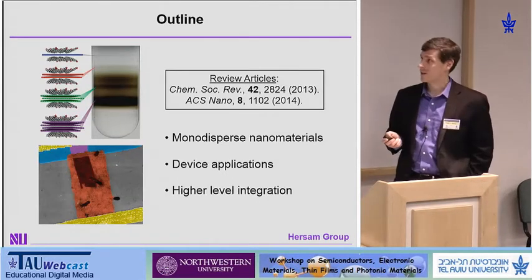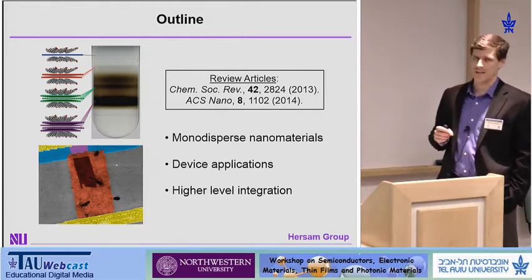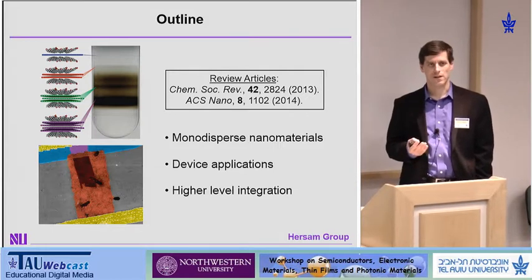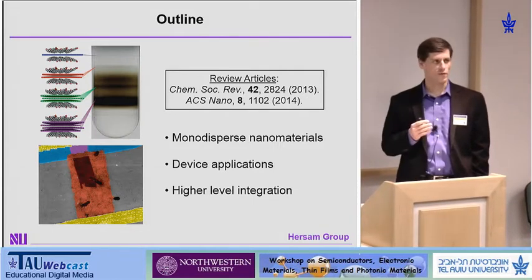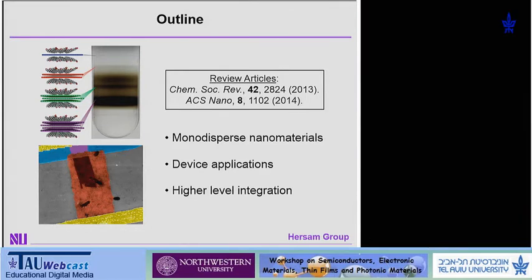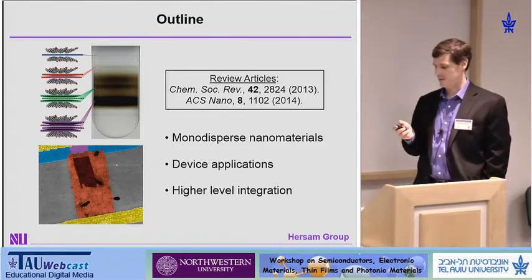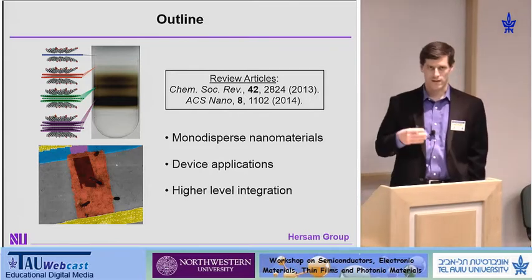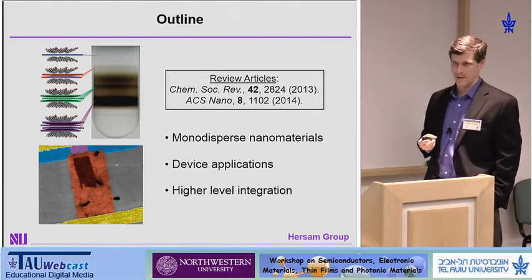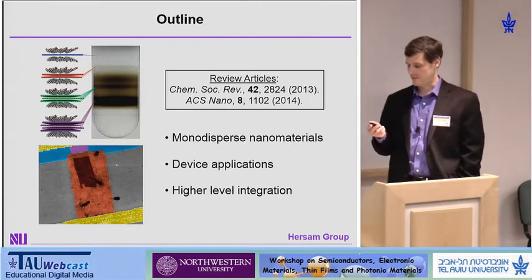The outline of my talk is shown here. I'll begin by introducing what I call monodisperse nanomaterials, then move into device applications that exploit these monodisperse nanomaterials. The purity or degree of monodispersity will lead to improvements in performance. The problem is that once your purities approach 100%, all of your device metrics will asymptotically approach some limit. We've reached that limit, so if we want to go to the next level, we have to explore higher-level integration using more than one material.